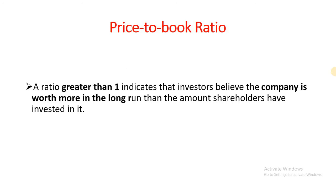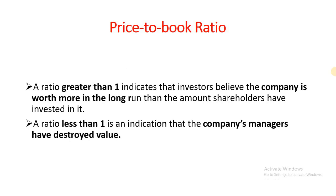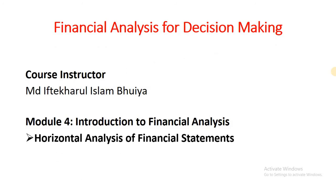In general, if a price-to-book ratio is greater than 1, it indicates that investors are confident that the company is worth more in the long run. If the ratio is less than 1, it indicates that the company's managers are destroying the value of the company, or have destroyed the value of the business. That's all about this lecture. In our next lecture we will cover horizontal analysis of financial statements.